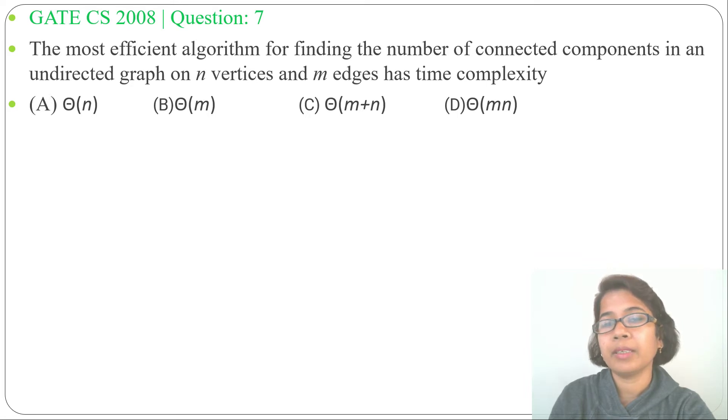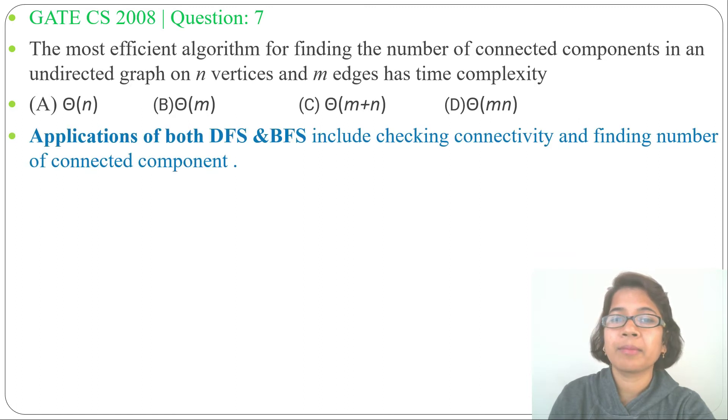We already know that DFS and BFS are the most efficient algorithms for checking connectivity, also for finding number of connected components. And for DFS and BFS, time complexity is the same.